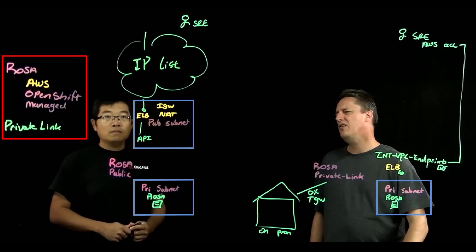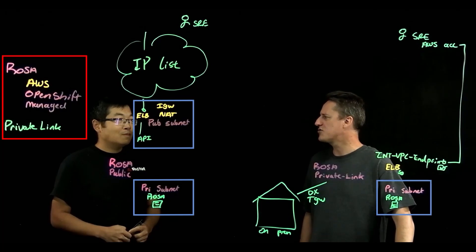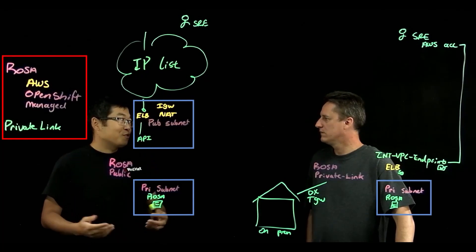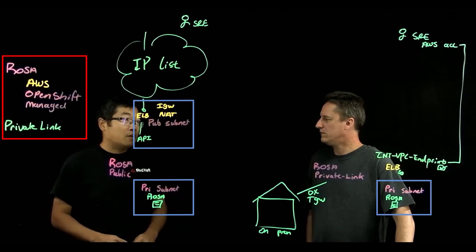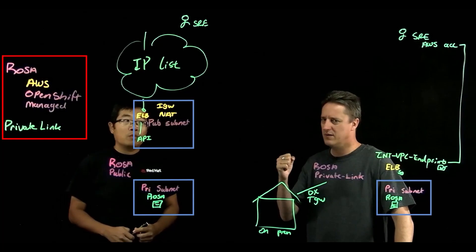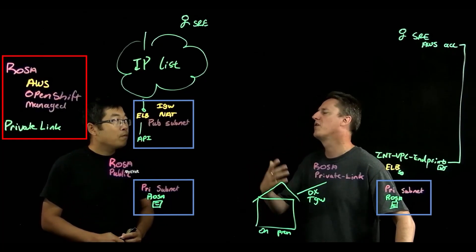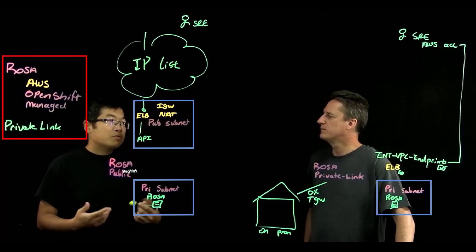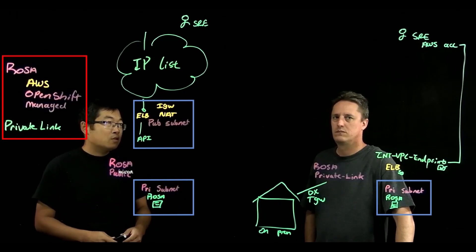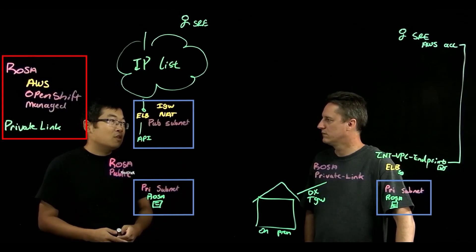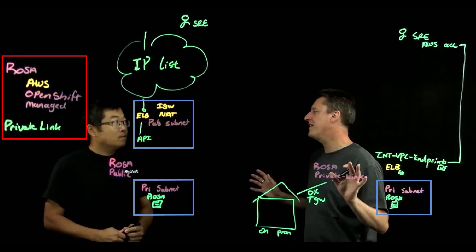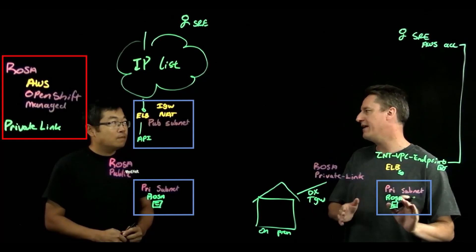Of these two, which is the most common implementation? Enterprise customers are not comfortable exposing their cluster API to the internet, so private link is definitely the most popular way to implement ROSA. Public implementations are for smaller or non-production contexts, or applications that aren't security-critical. With the private link model, you can still expose your application publicly — you're just not exposing the cluster API publicly. And importantly, this private link is only for the Red Hat SRE teams mandated to manage the environment — it's not general access to Red Hat.